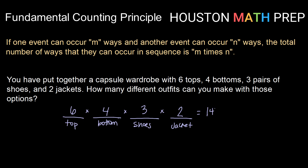That makes 144 possible outfits with six tops, four bottoms, three pairs of shoes, and two jackets. Without having to list them all out, we were able to quickly and easily calculate the number of outfits possible. That is the power of the fundamental counting principle. All right, that does it for this video, guys. Until next time, we'll see you later.